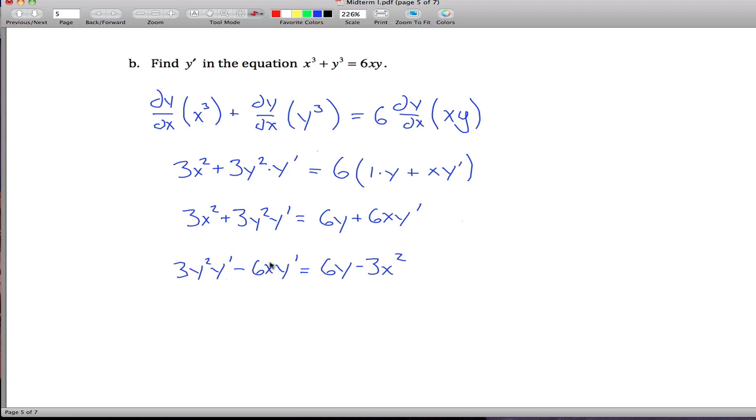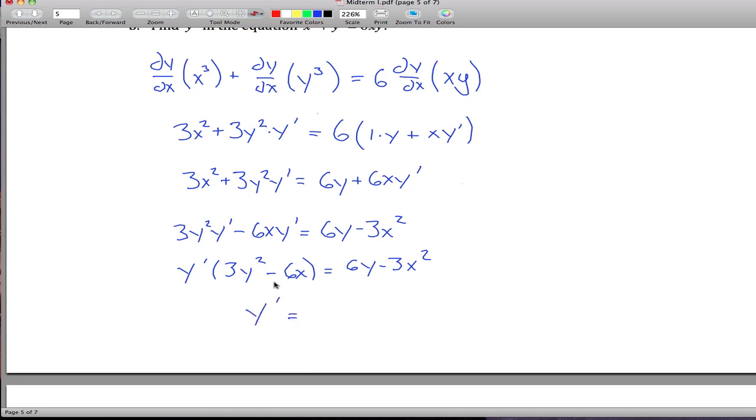And now we've got a y prime in all the terms on the left, so factor out a y prime. And so finally to finish and solve for y prime, all we've got to do is divide by all this mess, so our final answer is 6y minus 3x squared divided by 3y squared minus 6x. You can take a 3 out of all these, but you don't have to, I don't really care if you do or not. If you really wanted to, it would be 2y minus x squared over y squared minus 2. But really, either of those answers I'll give you full credit, and that's the end of the implicit differentiation problem.